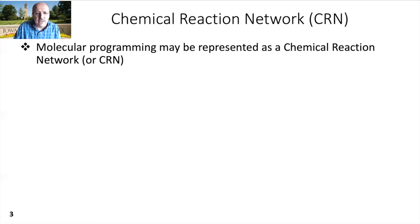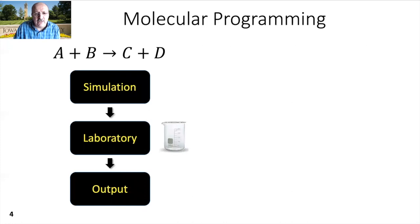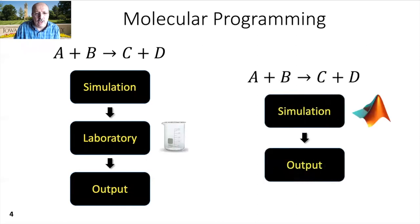A CRN may be implemented as chemical reactions — for example, when molecules A and B react, they produce molecules C and D. Molecular programming is becoming more popular nowadays, and these systems need to work correctly. Like any other programming language, CRNs can have faults and need to be simulated before the lab work. Lab work is generally more time consuming and expensive, so the programming and simulation parts are very important, where you actually build a correct program.